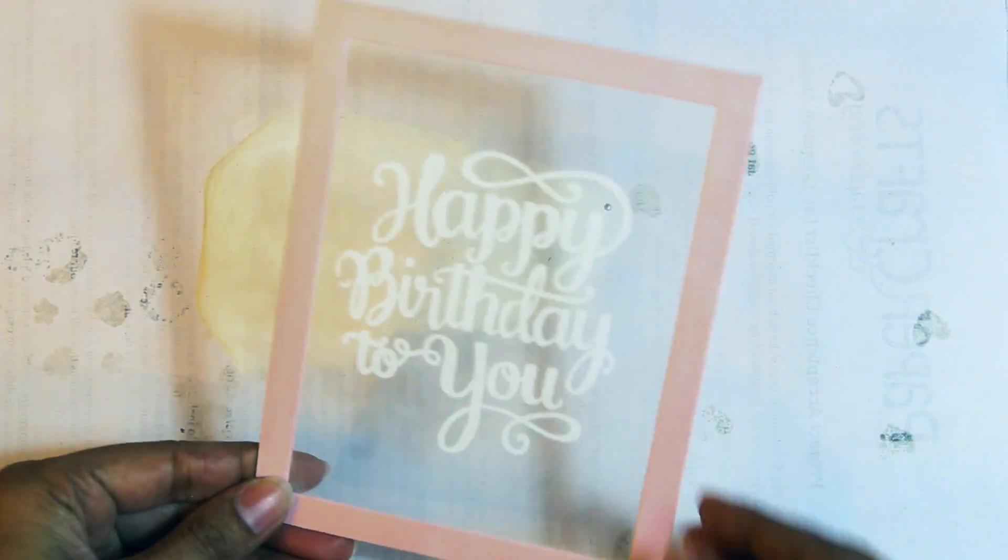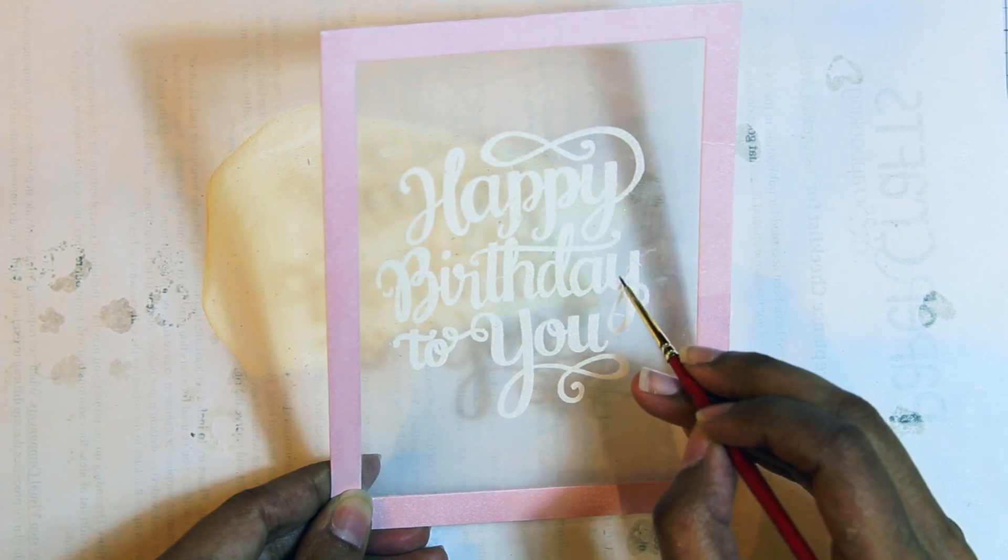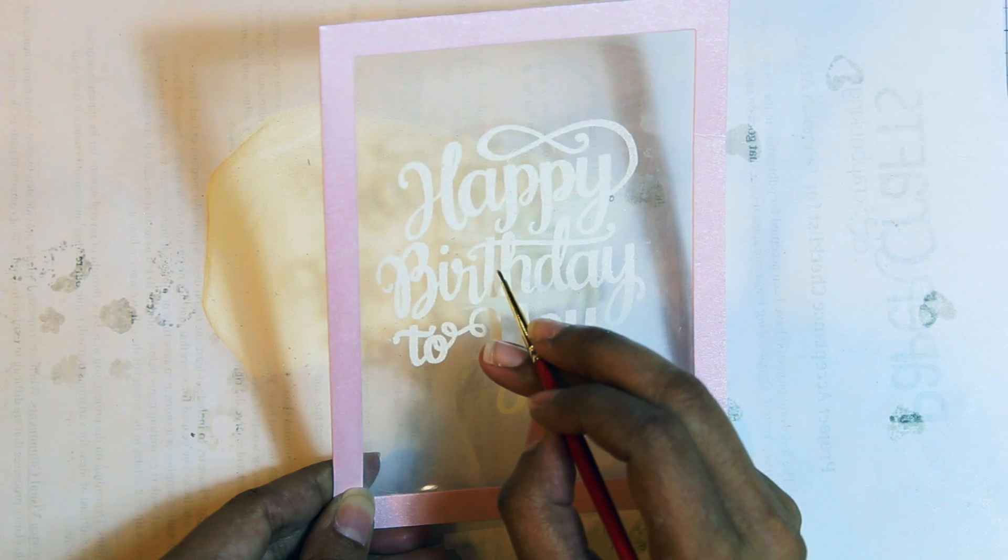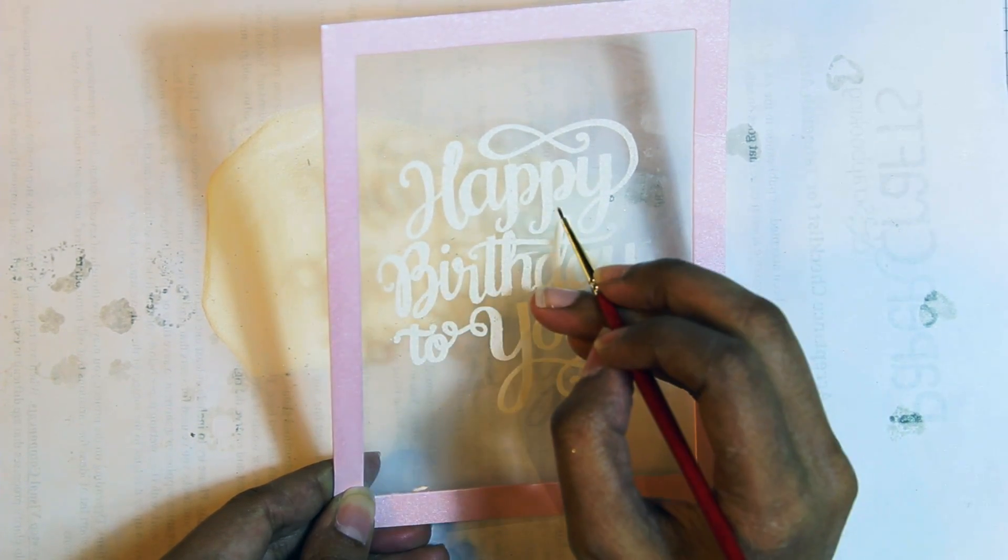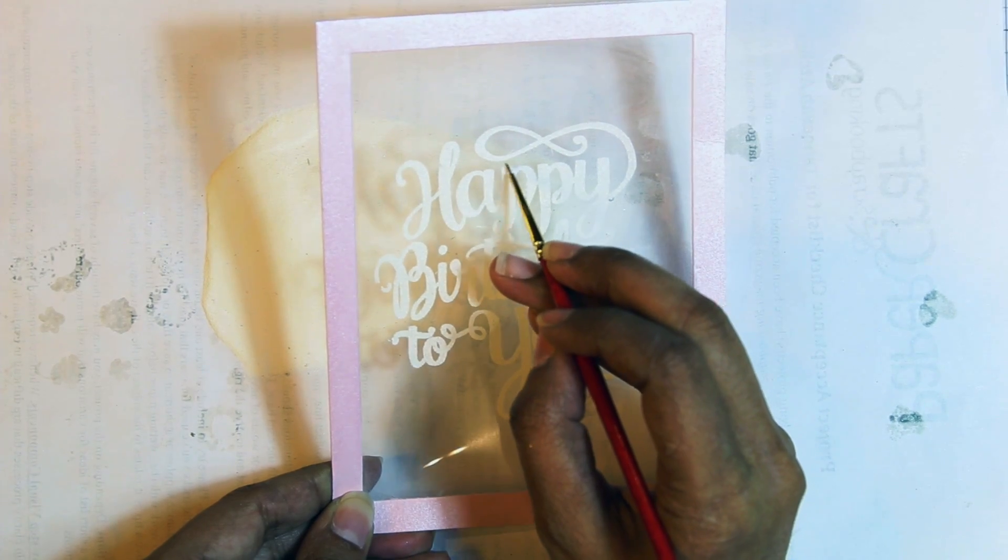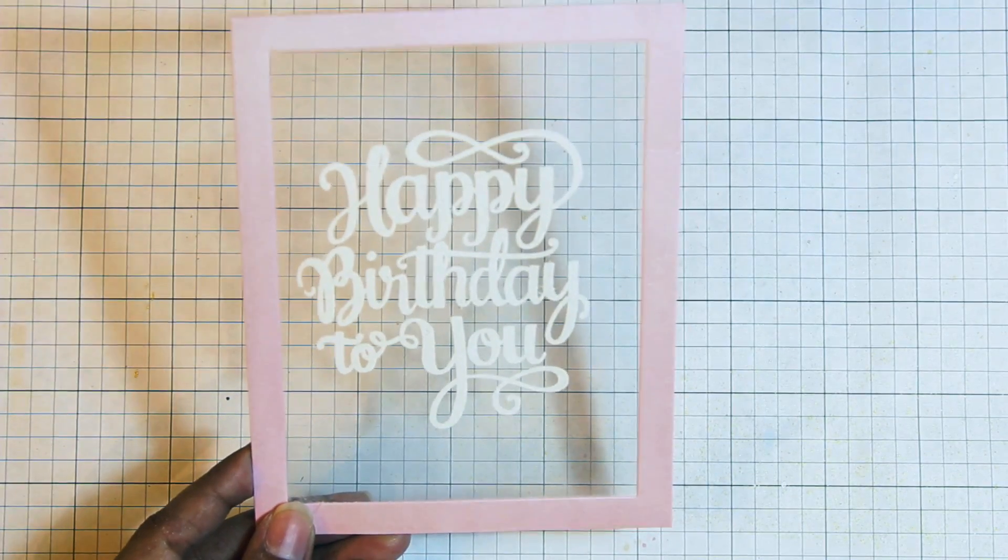You'll find that there will be some stray granules of embossing powder on that acetate. And you can remove these using a very fine paintbrush, which is what I'm going to do now. Just being very, very careful with where I touch that paintbrush to the acetate so that I don't take off any of the powder that I don't want to. Just take your time when you're doing this step. There's no rush and you want to be precise so that you get good results.